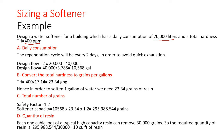First of all, we need to adjust the daily consumption. Because the softener has resin and the capacity of the resin can be quickly exhausted. We need to rinse this resin with a salt solution, that's why we have to choose a regeneration cycle. Here we have chosen a cycle every two days, so every two days we will rinse our resin with a salt solution.